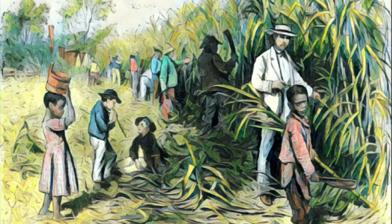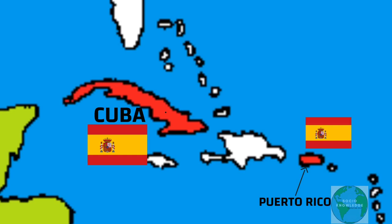Taking advantage of the situation in Cuba, US businesses began monopolizing the sugar markets. In 1894, 90% of Cuba's total exports went to the US. Cuba's total exports to the US were almost 12 times larger than exports to Spain.